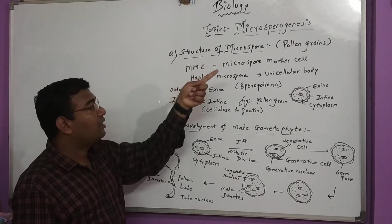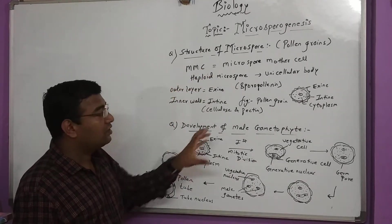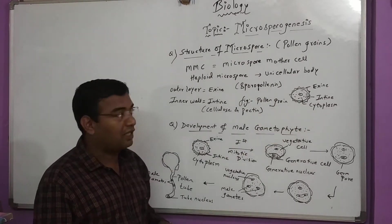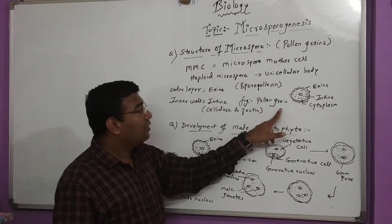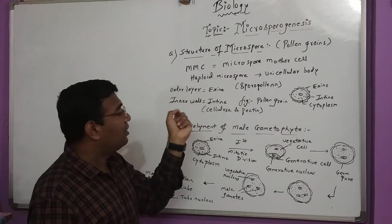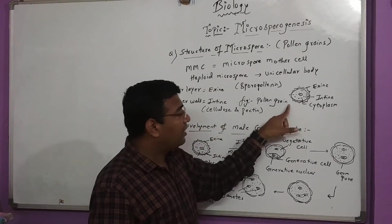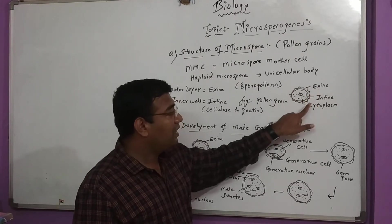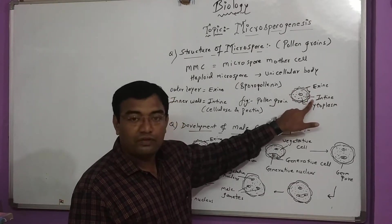The structure of microspore in pollen grains consists of this basic form. Pollen grain is a small male gametophyte with an outer layer called exine and an inner wall called intine.